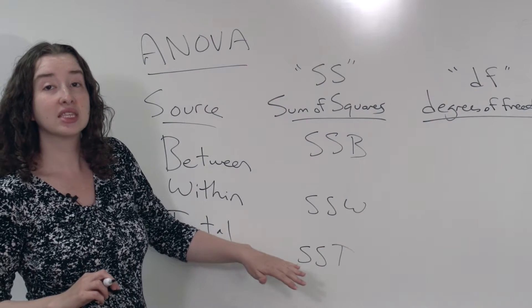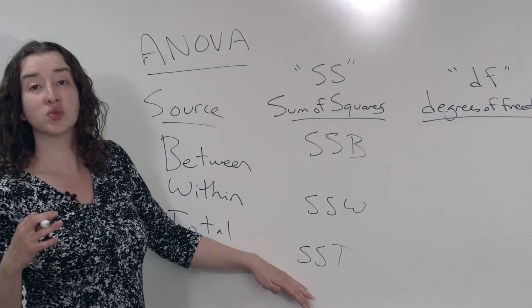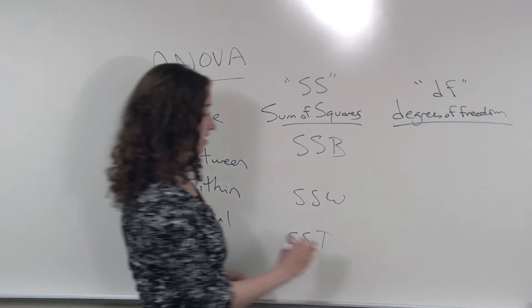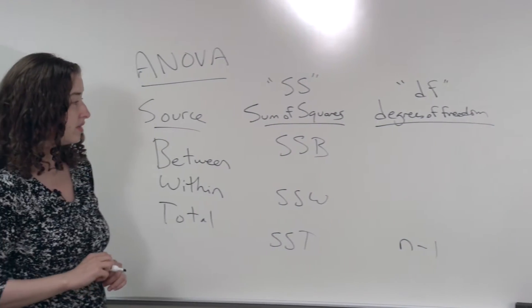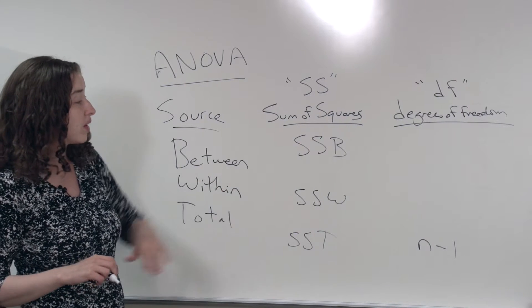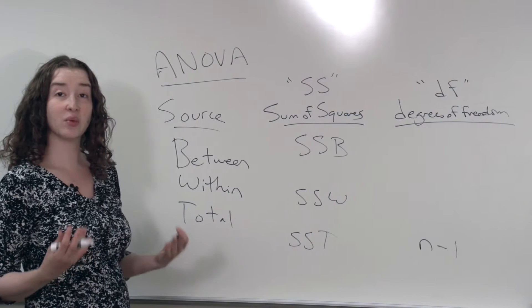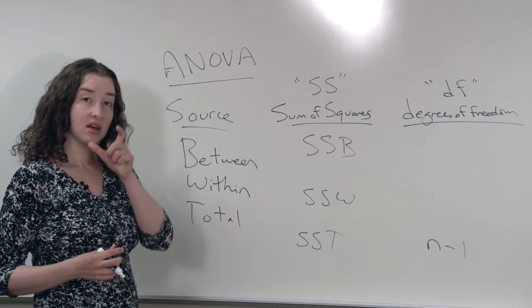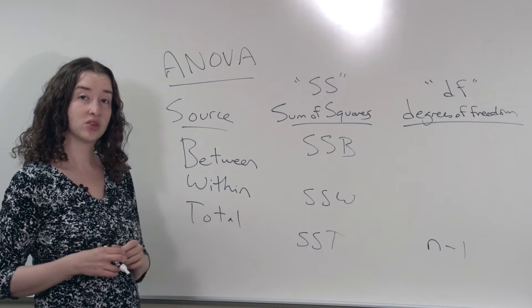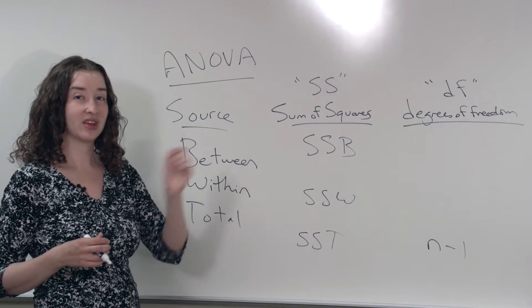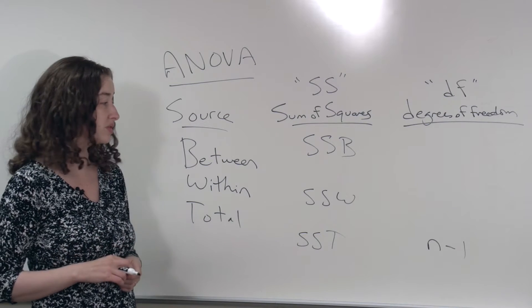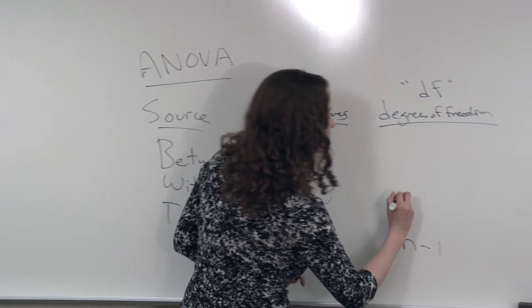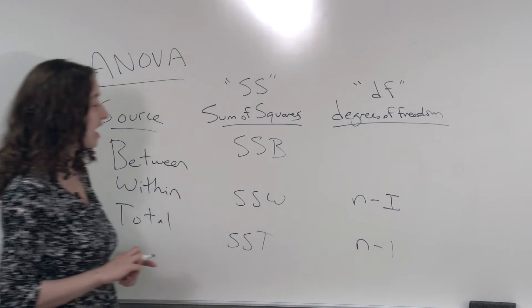So we know that if we take this sum of squares total and divide by n minus 1, we've got the sample variance for the entire data set. So it turns out that n minus 1 is the degrees of freedom corresponding to the total. We also know that if we take the sum of squares within and divide by n minus i, where i is the number of groups, SSW divided by n minus i is our estimate of the variance within each group, assuming that the true variance within each population is the same. It's the pooled sample variance. So n minus i is the degrees of freedom, the amount of information we have associated with SSW.